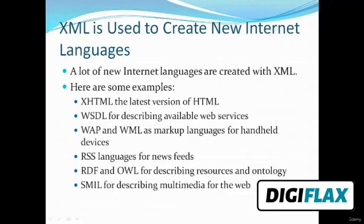XML is used to create new Internet technologies and languages. A lot of new Internet languages are created with XML. For example, XHTML — the latest version of HTML — is also created using XML. WSDL is used for describing available web services. WAP and WML are markup languages for handheld devices. RSS is used for news feeds. RDF and OWL are used for describing resources and ontology. SMIL is used for describing multimedia for the web.